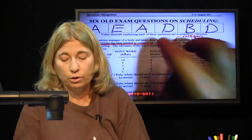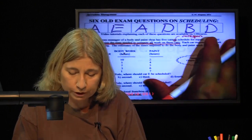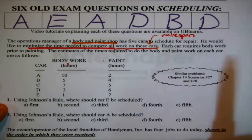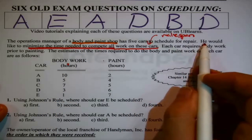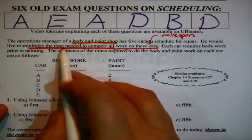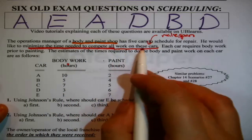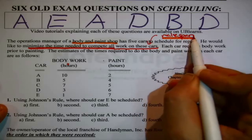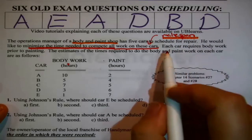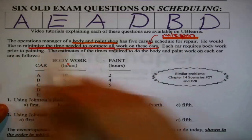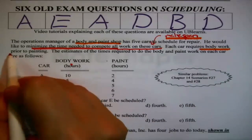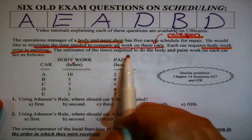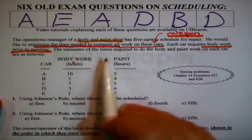For instance, which one is this first scenario? The operations manager of a body and paint shop, that is tipping me off right away, has five cars to schedule for repair. He would like to minimize the time needed to complete all work on these cars. That is known as make-span. Each car requires body work prior to painting.